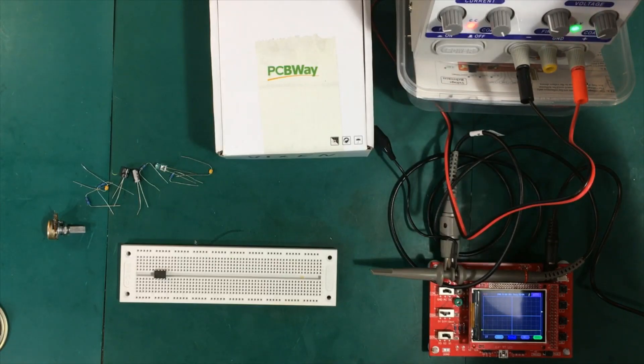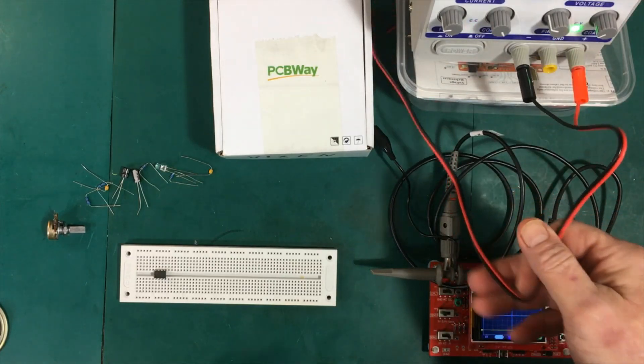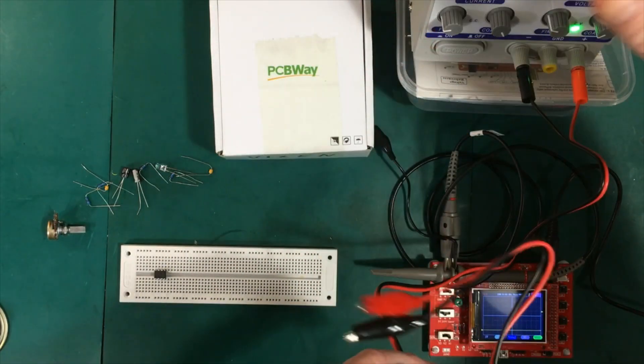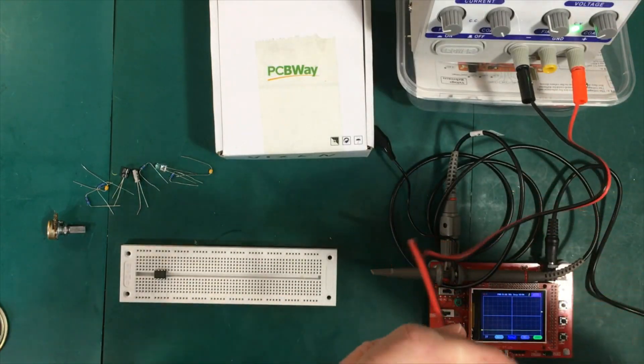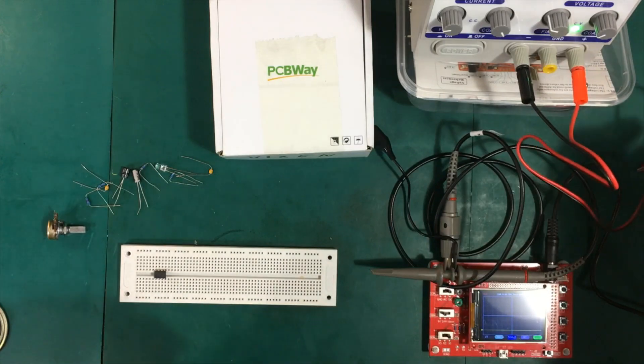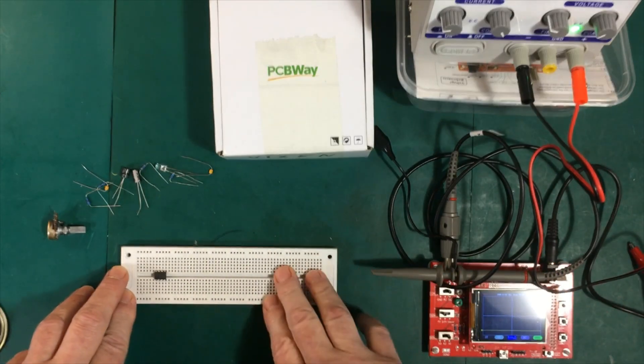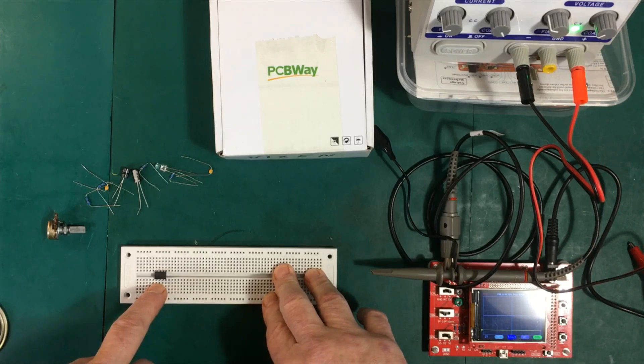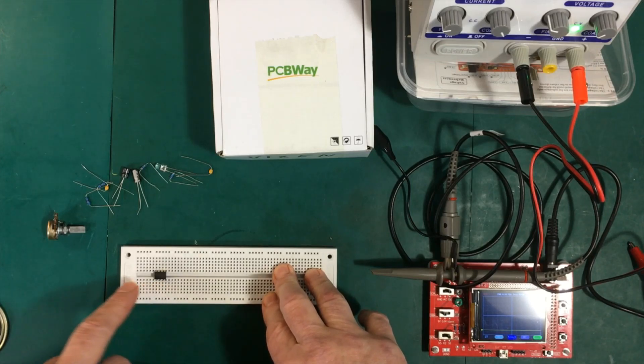Here we've got our power supply. I've already set this up for nine volts and I've got the current set to about 200 milliamps. So we're all set to go with that. We've got the oscilloscope ready to look at some of the waveforms. And here we have one of our breadboards with the 555 already mounted in.